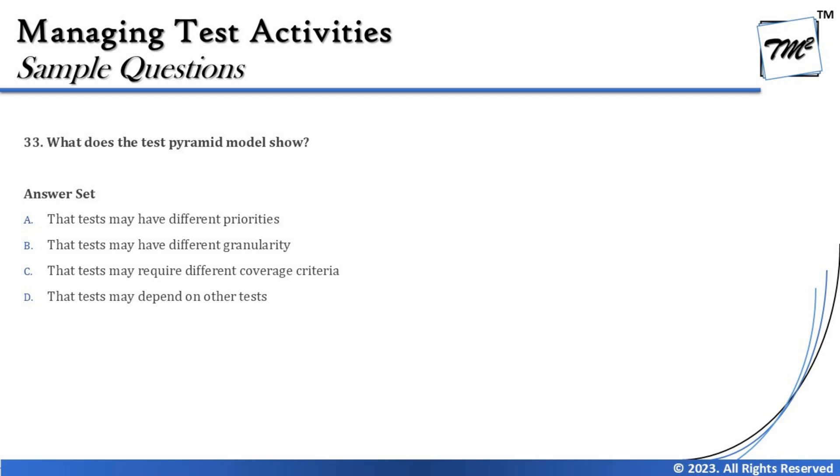Option B says the tests may have different granularity. Granularity is a technical word which talks about the concreteness of a test — it talks about writing more and more number of test cases. When I say coarser and finer — two important words under granularity — coarse means high-level test cases, and fine means very small and many of them. So yes, exactly, the test pyramid talks about granularity of the test.